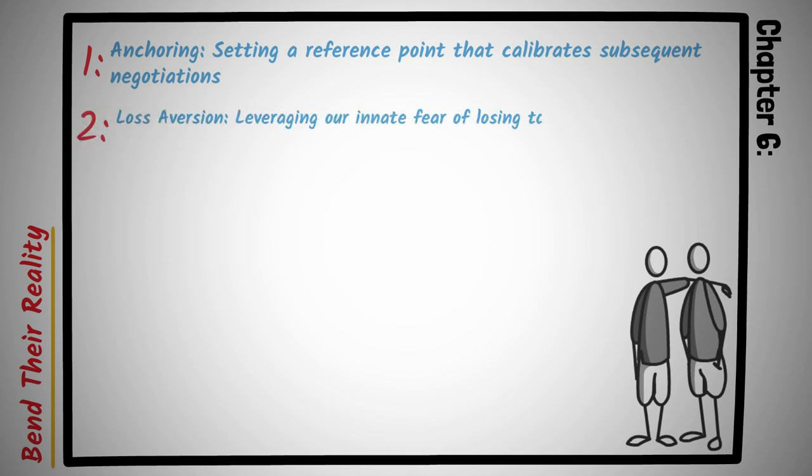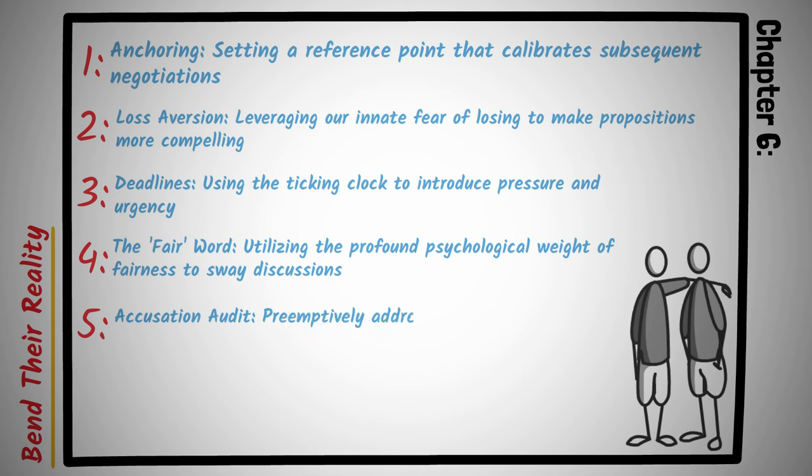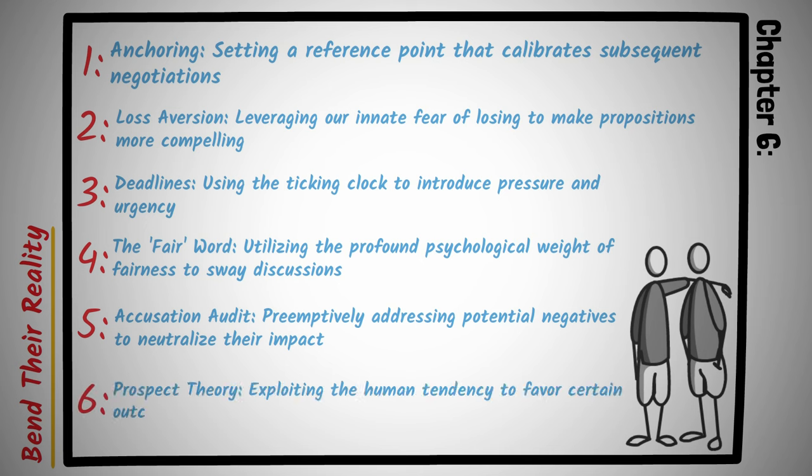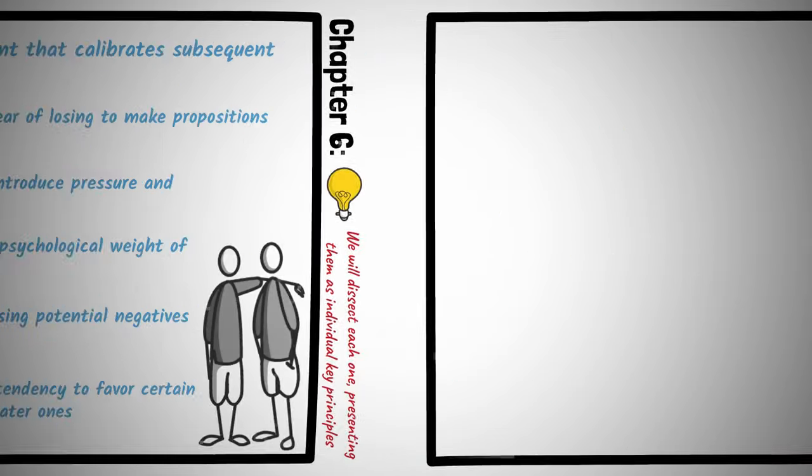One, anchoring. Setting a reference point that calibrates subsequent negotiations. Two, loss aversion. Leveraging our innate fear of losing to make propositions more compelling. Three, deadlines. Using the ticking clock to introduce pressure and urgency. Four, the fair word. Utilizing the profound psychological weight of fairness to sway discussions. Five, accusation audit. Preemptively addressing potential negatives to neutralize their impact. Six, prospect theory. Exploiting the human tendency to favor certain outcomes over uncertain, potentially greater ones. To provide a deeper understanding and practical application of these tactics, we will dissect each one, presenting them as individual key principles. Through this segmented exploration, I aim to equip you with a holistic toolkit for bending reality and negotiations, ensuring you're not just heard but truly understood.